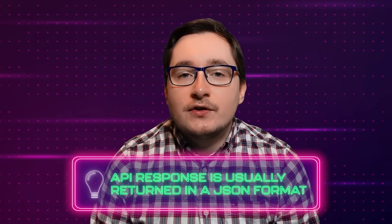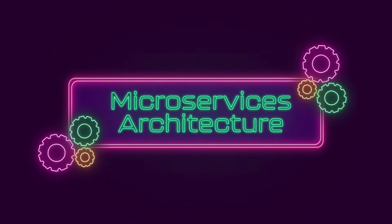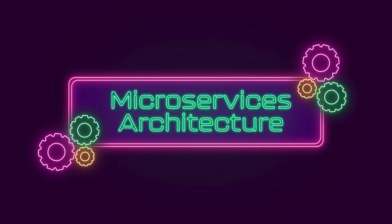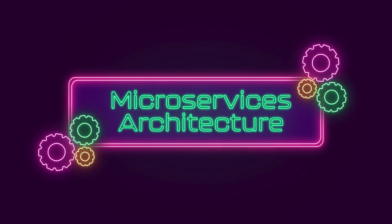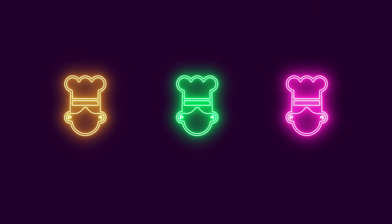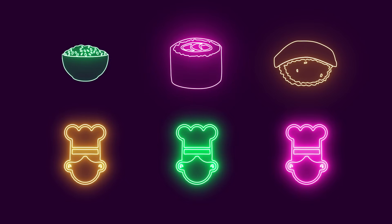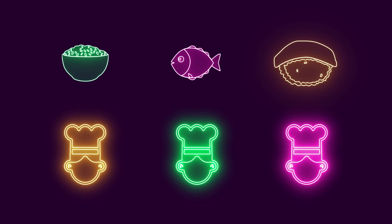The API response returned from the server is usually returned in JSON format, making it easy to read. APIs power microservices architecture. Microservices focus on breaking down complicated workflows into much simpler and smaller steps. Think of a sushi restaurant — instead of three chefs each creating complicated dishes by themselves, the steps are broken down: one chef focuses completely on the rice, another focuses on cutting the fish, and another assembles all the sushi.